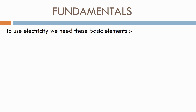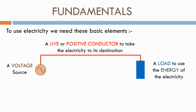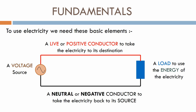To use electricity we need these basic elements: a voltage source, either AC or DC; a live or positive conductor to take the electricity to its destination — this could be made of copper or aluminium; a load to use the energy of the electricity, such as a washing machine or a hairdryer; and a neutral or negative conductor to take the electricity back to its source.